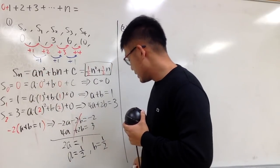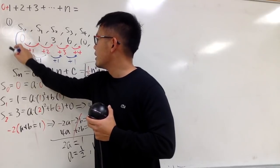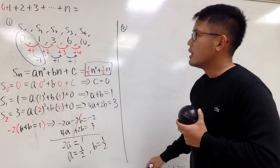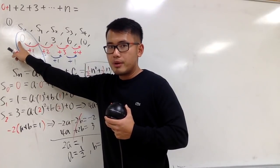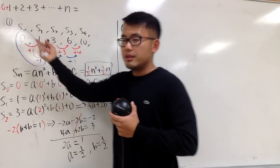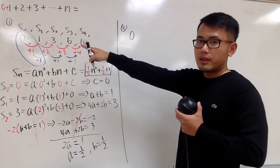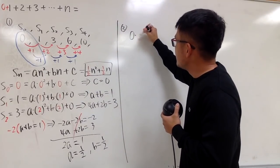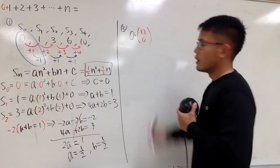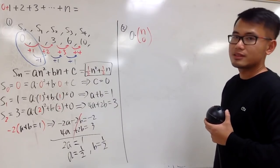Now we utilize these numbers from the difference table. The zeroth-level number is 0, which we multiply by n choose 0. Then we add the next number, which is 1, multiplied by n choose 1, since that's the first level.